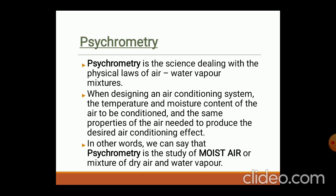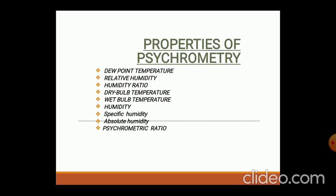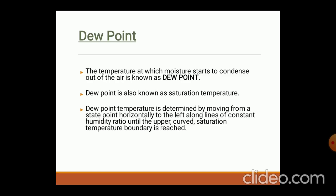What do we mean by moisture? That is the water vapor present in the air — that is called moisture. Now, the technical points to be studied as properties in psychrometry are: dew point temperature, relative humidity, humidity ratio, dry bulb temperature, wet bulb temperature, specific humidity, absolute humidity, and psychrometric ratio. We will see these properties one by one.